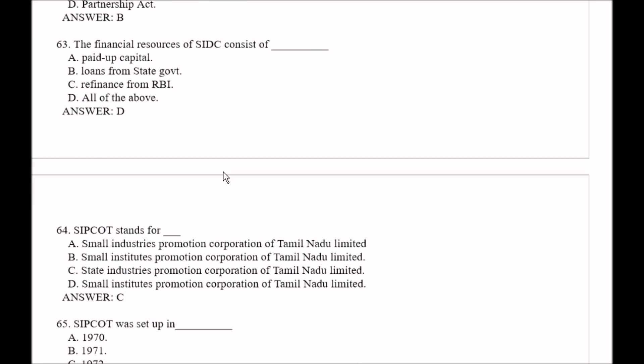Question number 63: The financial resources of SIDC consists of — Option A, paid up capital; Option B, loans from state government; Option C, refinance from RBI; Option D, all of the above. The right answer is Option D, all of the above.